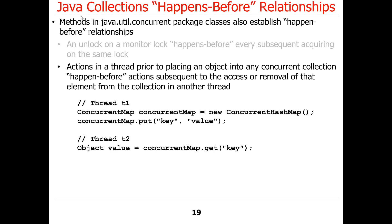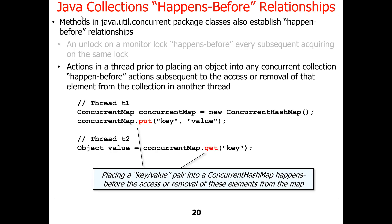Likewise, for various collections such as ConcurrentHashMap, actions in a thread prior to placing an object into a concurrent collection must happen-before the actions subsequent to the access or removal of that element from the collection in another thread. Here we have an example where thread one creates the hash map, puts some elements into it, and then thread two goes ahead and gets the value associated with a key. The key point is that placing a key-value pair into the ConcurrentHashMap must happen-before the access or removal of that pair. This ensures you don't end up with inconsistent state where the key goes into the map but the value hasn't quite made it in yet when someone else tries to access it.